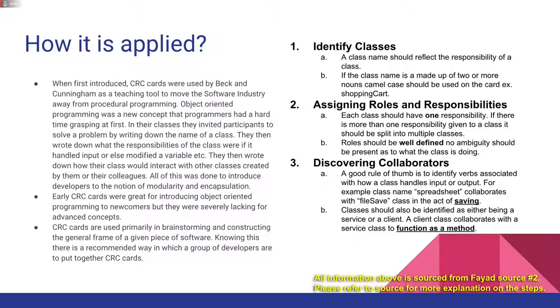Discovering collaborators. A good rule of thumb is to identify verbs associated with how a class handles input or output. For example, class name spreadsheet collaborates with file save class in the act of saving. Classes should also be identified as either being a service or a client. A client class collaborates with a service class to function as a method.